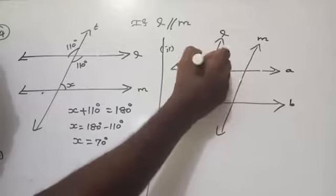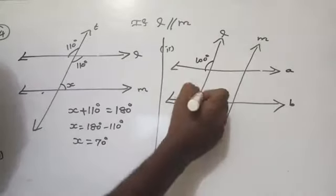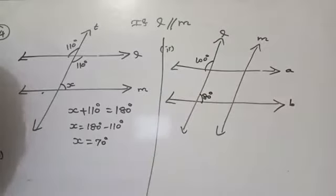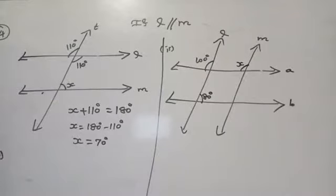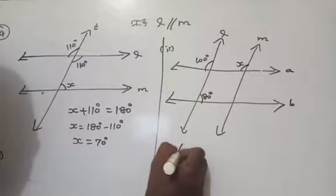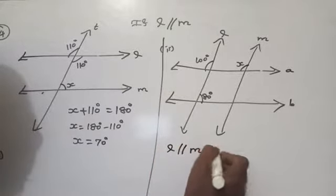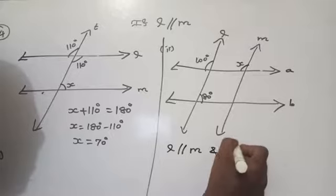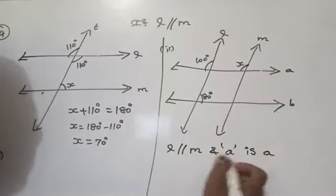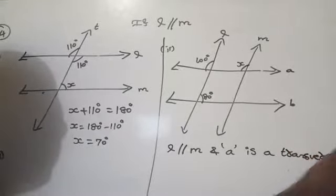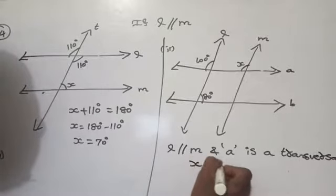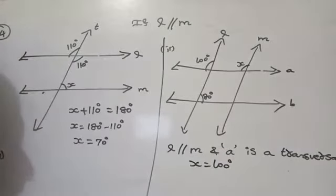It is given that it is 100 degrees, and then it is 80 degrees. You have to find the value of x. If these two lines are parallel, line A is a transversal. Since line L is parallel to M and line A is a transversal, directly you can see that x is equal to 100 degrees.